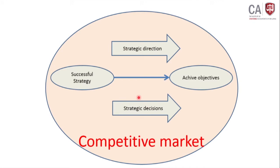Your parents give strategic direction: study 2 hours per day, do mathematics well since you are weak in it, and so on. Your ultimate objective is to pass the A-level examination — you pass Grade 5, then O-level, then A-level. Your parents gave directions to achieve that objective. There can also be strategic decisions — for example, if you pass the Grade 5 scholarship examination, you will be transferred to another good school. That is your parents taking strategic decisions.